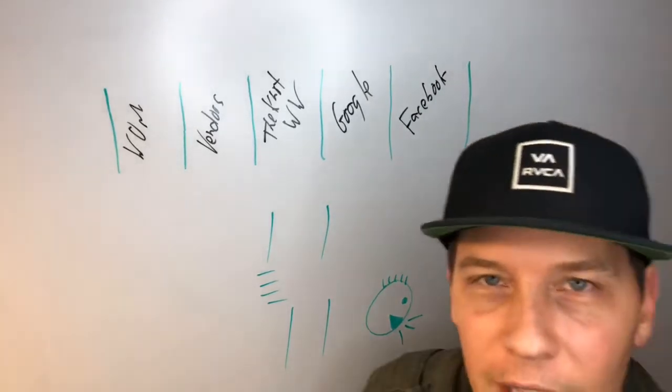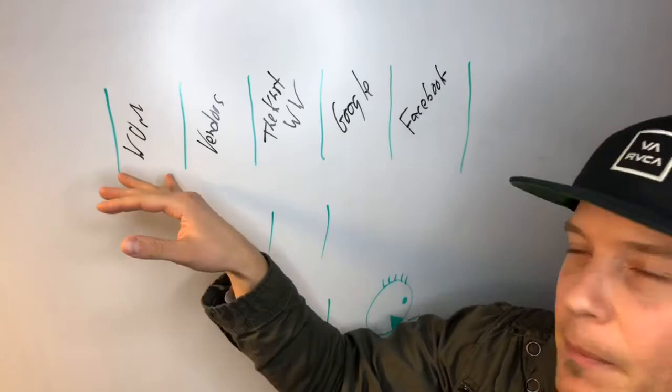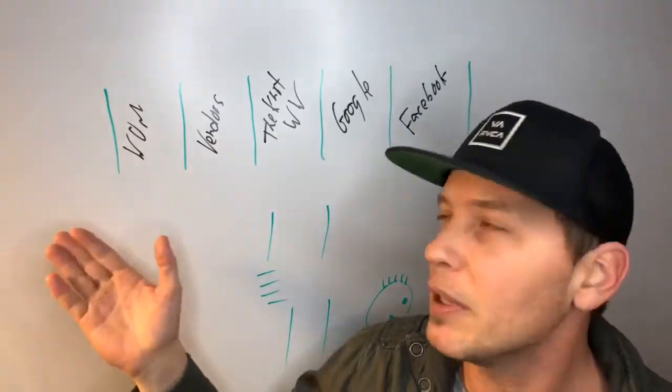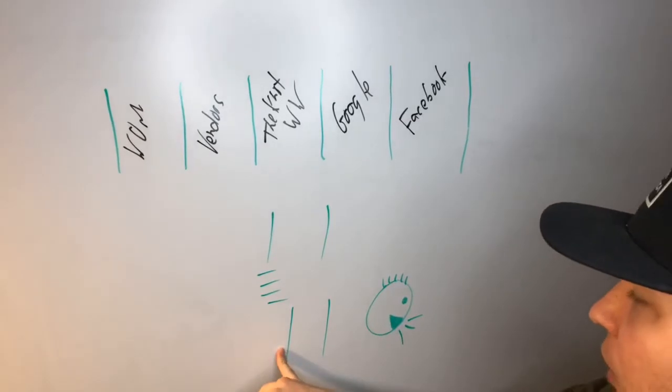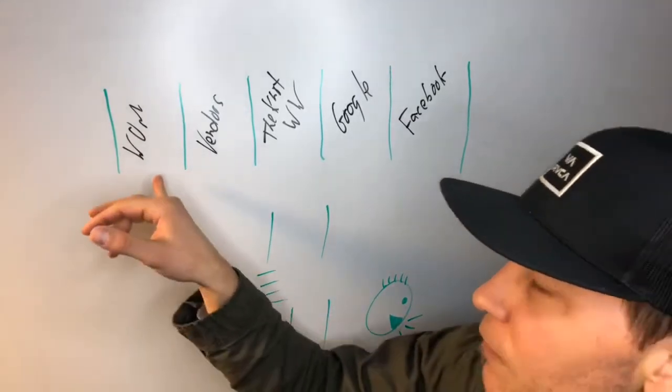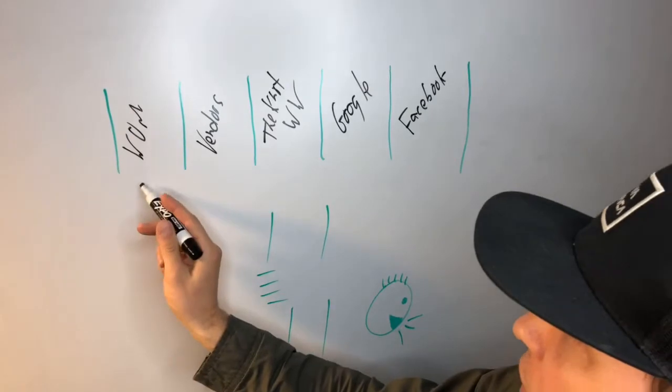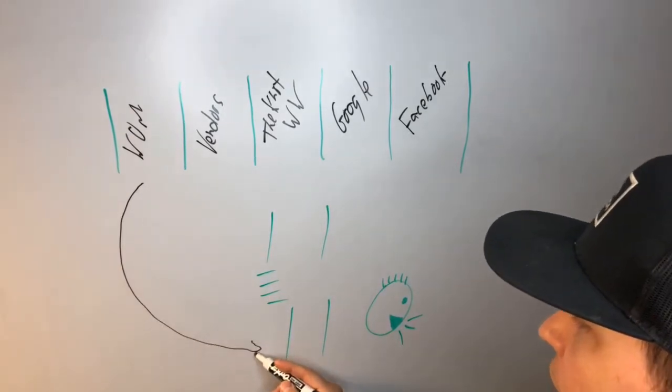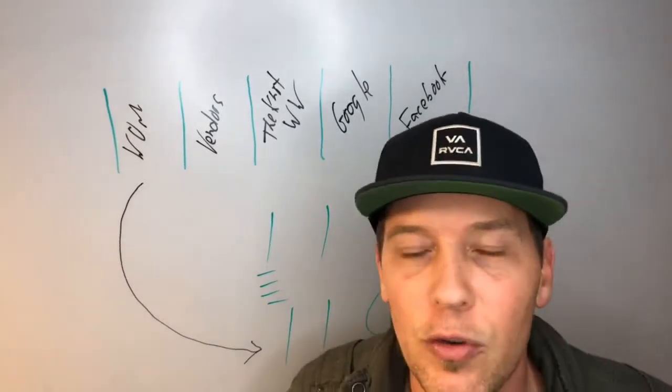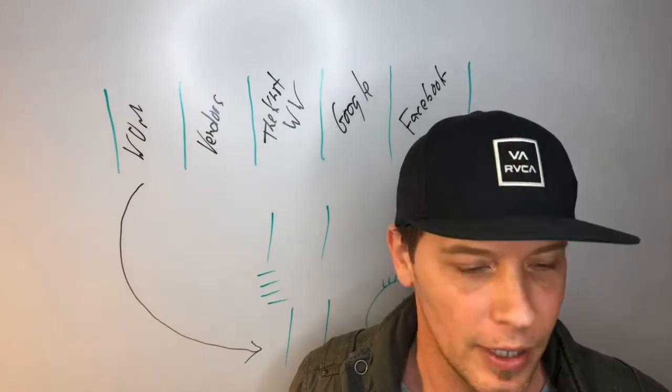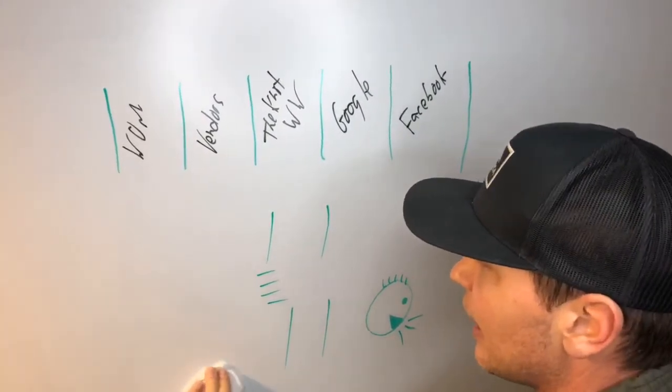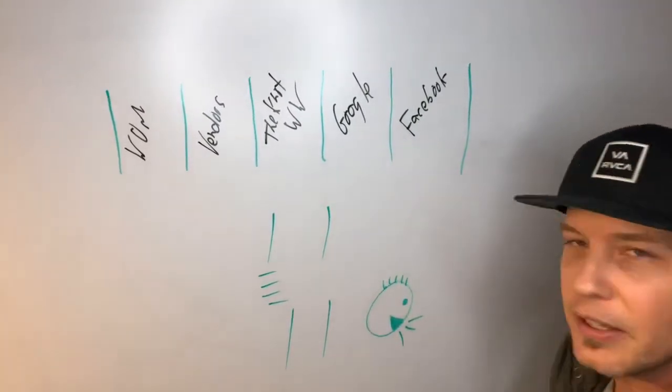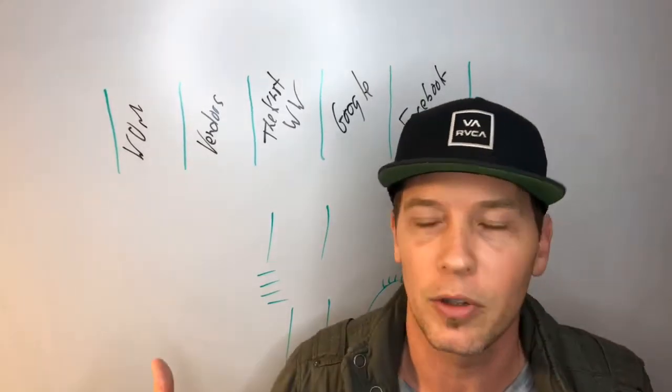But for even those of you that are just doing the word of mouth thing, what you're probably doing is going straight from word of mouth to setting up a phone call. And if you do that, you are missing out on building trust along the way, right? Like you've got to build trust on the phone immediately, and that's kind of hard to do, especially from somebody that you don't know. I mean, it might be good that somebody said 'Hey, trust this person,' but still they don't know you from Adam.